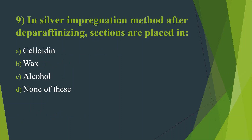Ninth question: In the silver impregnation method, after deparaffinizing, sections are placed in — Option A: Celloidin. Option B: Wax. Option C: Alcohol. Option D: None of these. Here the answer is Option A — Celloidin. Celloidin and paraffin are the two common embedding media used for histopathological examination.